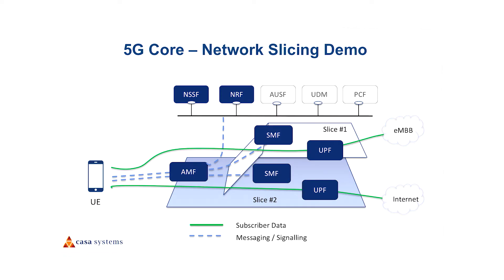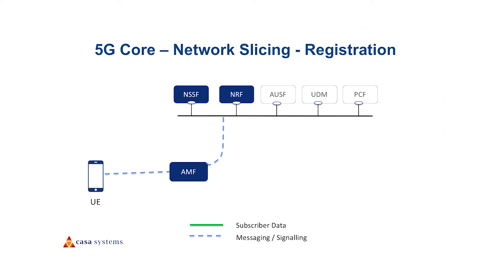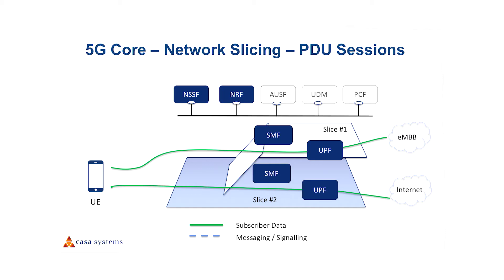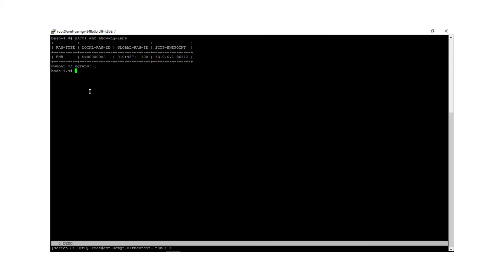Now that we have our 5G core network established and provisioned, let's move on to the actual slicing demonstration. On the screen, you can see that we will establish two separate data sessions from a single UE, each with different network characteristics. The UE first registers on the network through the AMF. The next step is slice selection, where SMF-UPF pairs are identified. And finally, PDU sessions are set up and data is flowing. At this point, we have fully established slices.